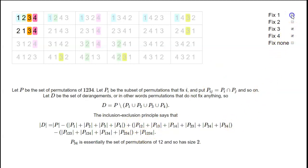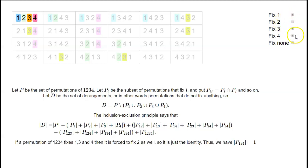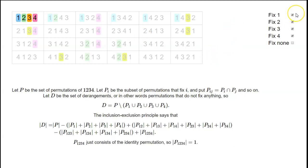What if we take the intersection of three sets, like permutations that fix 1, 3, and 4? Then 2 just has to go to itself as well, because there's no other choice left. So P_{1,3,4} — that is P1 intersect P3 intersect P4 — just consists of the identity and has size 1. And if we fix all four numbers, P_{1,2,3,4} also just consists of the identity, so that also has size 1.